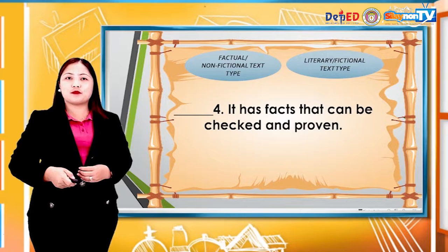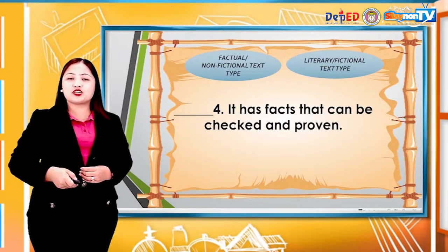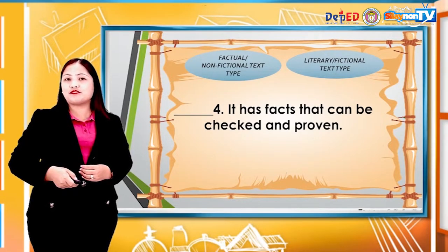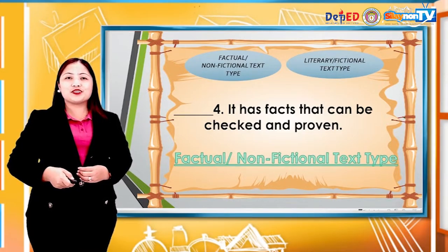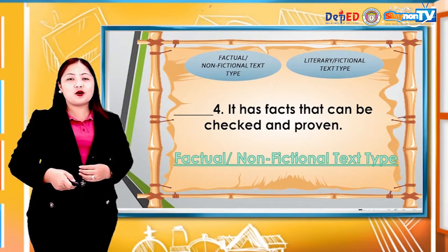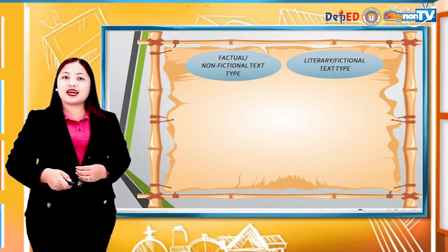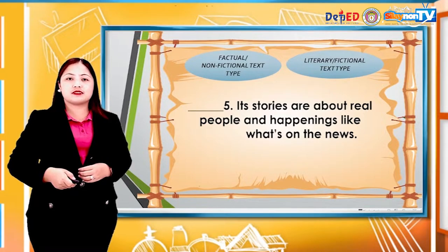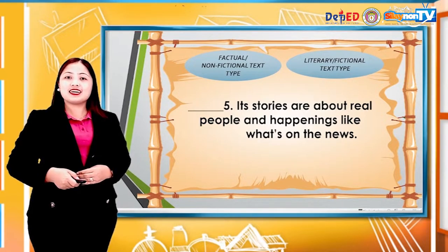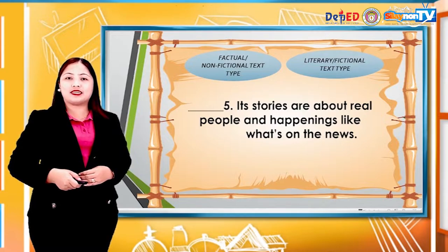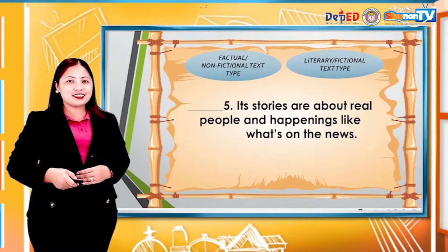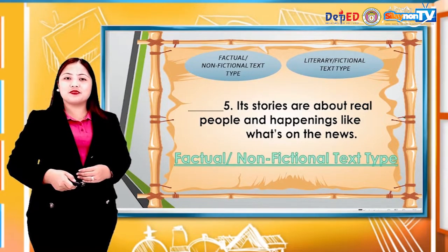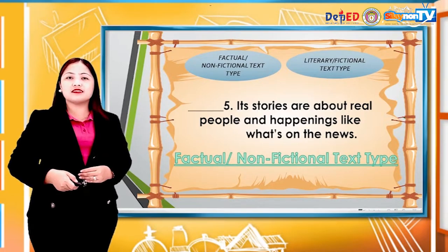Number four: it has facts that can be checked and proven. The answer is factual or non-fictional text type. Number five: its stories are about real people and happenings, like what's on the news. The answer is factual or non-fictional text type.